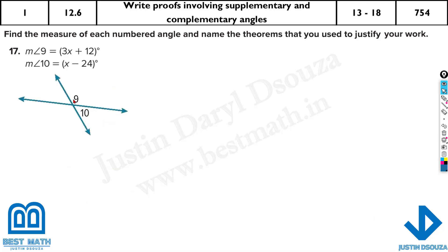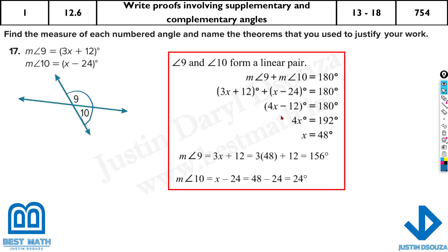For angles 9 and 10, this is a linear pair, that means when you add them up it's going to be 180 degrees — it's a straight line, so this plus this will equal 180 degrees. You can use your calculator and solve it up. Find the x, then substitute over here to get the angles — very simple.